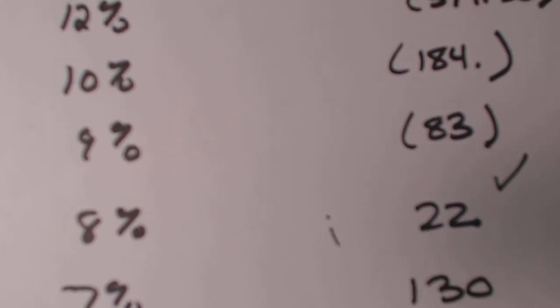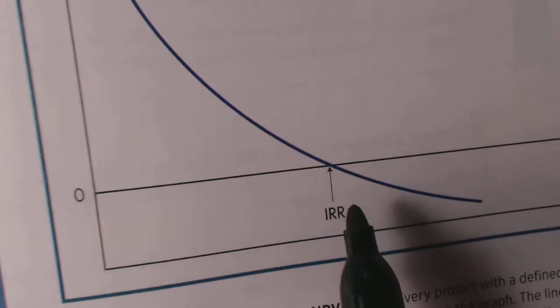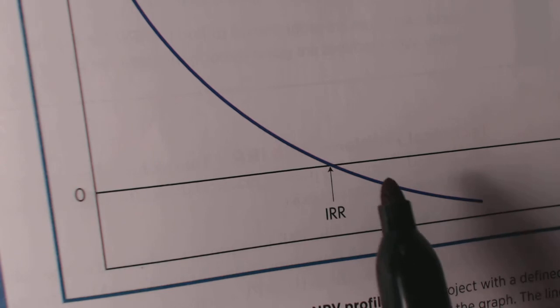And the closest you can get to zero on our chart here, the IRR being zero, as you can see the chart in the textbook here, that is where you want to be.